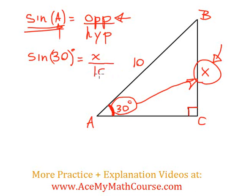And what is the hypotenuse? Just 10, because the hypotenuse is always opposite to the 90 degree angle. In this case, that is the hypotenuse.